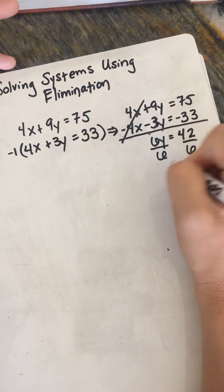And then we can take that y value and pick your favorite equation that you started with. It makes no difference. I'll take the bottom one. So 4x plus 3 times 7 now equals 33.